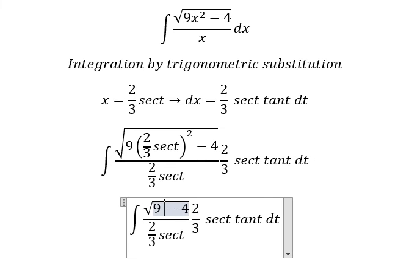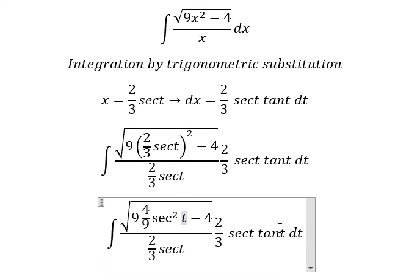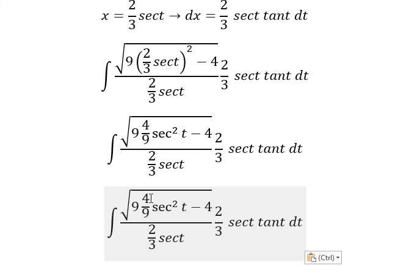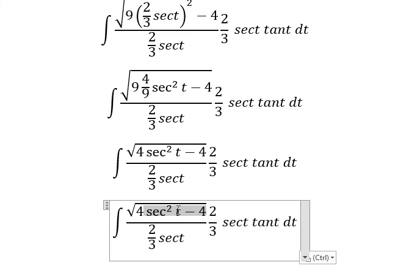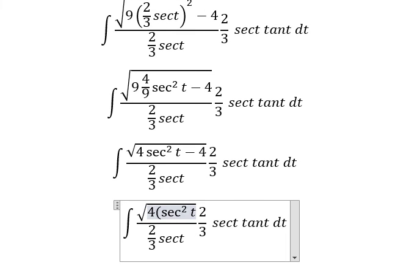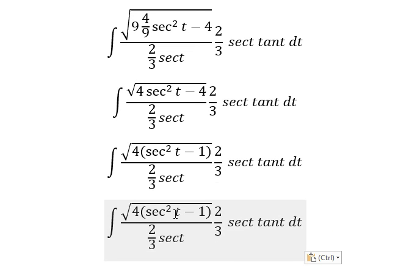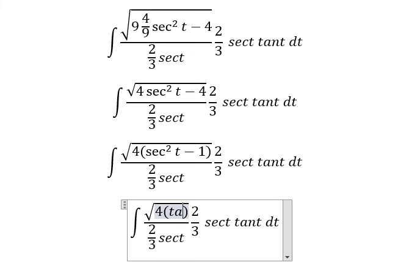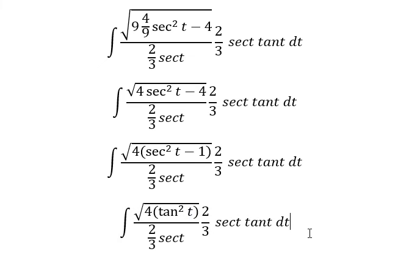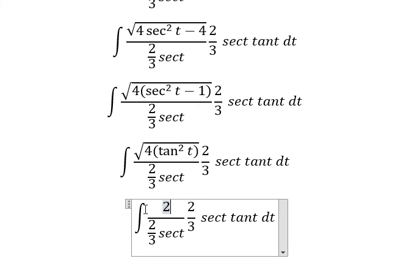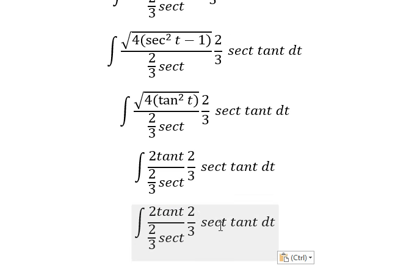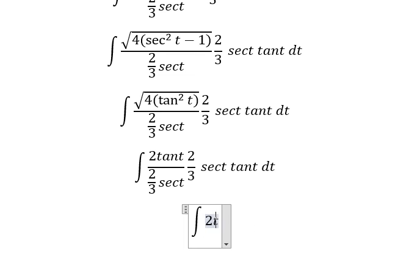Looking at the expression again: we have 4 over 9 secant squared t, the 9s cancel, the 4s cancel, we factor to get tangent squared t, and taking the square root gives tangent t. So the two tangent t terms multiply to give 2 tangent squared t.